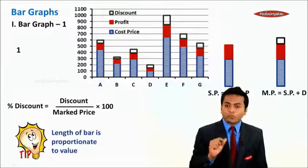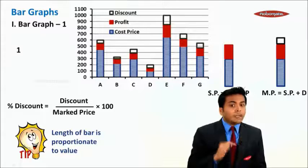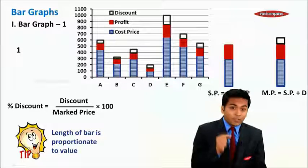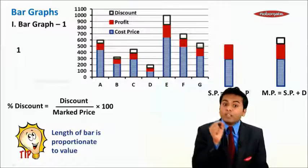You can solve this question by substituting the values, but for that we need to calculate discount percent for all seven products, and it would be time consuming.